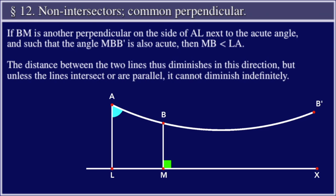If BM is another perpendicular on the side of AL next to the acute angle, and such that the angle MB'B' is also acute, then MB is less than LA. The distance between the two lines thus diminishes in this direction, but unless the lines intersect or are parallel, it cannot diminish indefinitely.